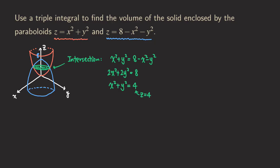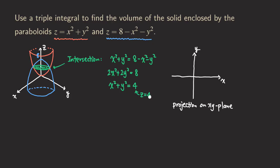Now we are ready to graph the projection onto the xy-plane. The projection is a disk based on the circle we found — it's a disk because it's a region. The radius is 2, and we are ready to start setting up the integral.